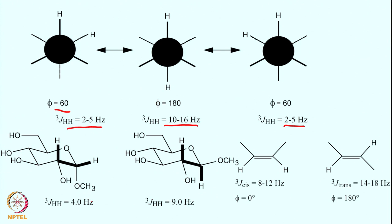In a specific molecule, the three-bond coupling between two protons is typically 4 Hz; when the orientation changes — changing the dihedral angle — the same coupling becomes 9 Hz. For double-bond systems, cis protons (phi ≈ 0°) show J of 8–12 Hz, while trans protons (phi = 180°) show J of 14–18 Hz. Torsion angle clearly governs three-bond coupling.